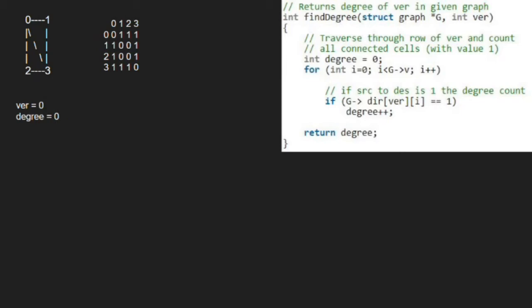Now, we traverse through row of ver and count all connected cells. That is, we count the number of 1s. The dir matrix is the adjacency matrix of this graph. So first, i will be 0 and we check if dir at 0,0 is 1. As it is false, we increment i.